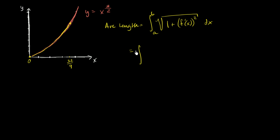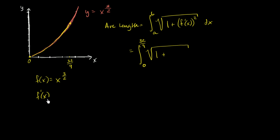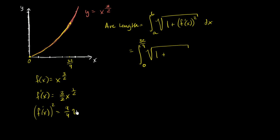In this case, that's going to be the definite integral from zero to 32 over nine of the square root of one plus — now what's the derivative? If f of x is x to the three halves, then f prime of x is going to be three halves times x to the one half. We picked this particular function because it simplifies quite well under the radical. So f prime of x squared is going to be nine over four times x, giving us the square root of one plus nine fourths x, dx.